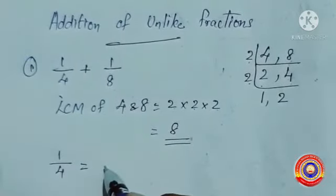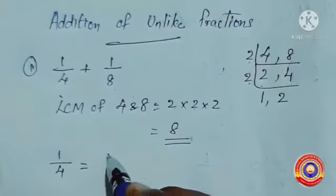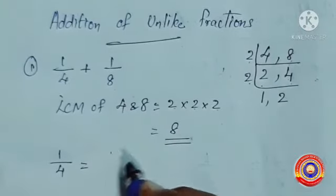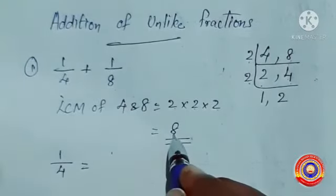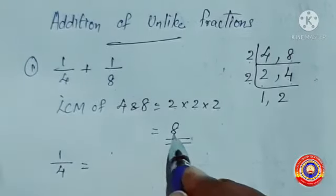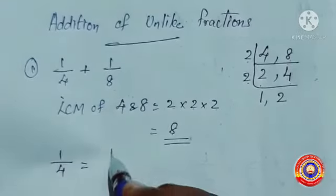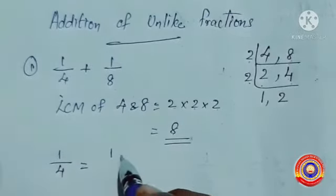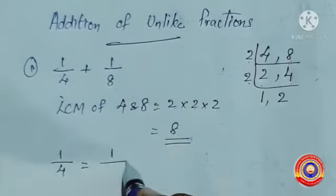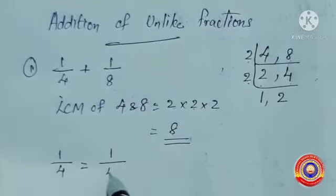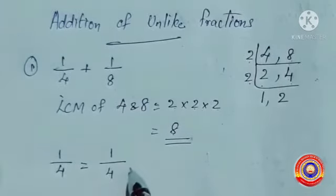Now we have to convert 1 by 4 and 1 by 8 into like fractions. For that we have to make the denominators of both fractions the same. The LCM is 8.